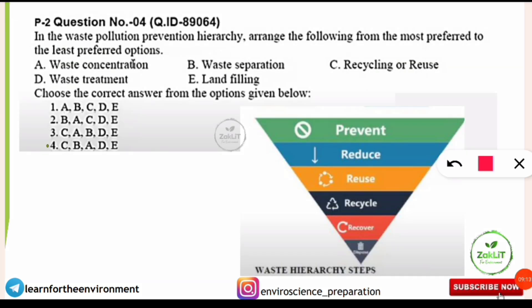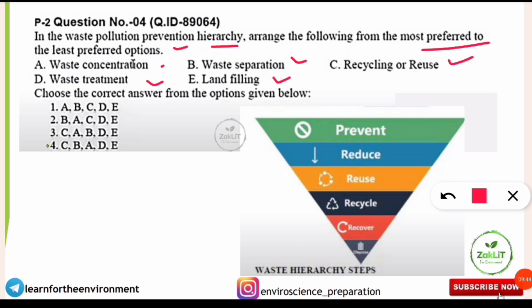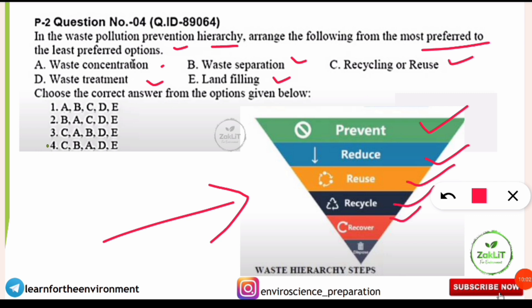The next question is from solid waste and hazardous waste management. In the waste pollution prevention hierarchy, arrange the following from most preferred to least preferred: waste concentration, waste separation, recycling or reuse, waste treatment, and landfilling. The waste hierarchy steps are: Prevention → Reduce → Reuse → Recycle → Recover → Dispose. Landfilling is least preferred because it deteriorates water and soil quality.